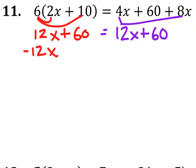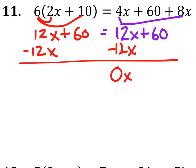You'd subtract 12x from both sides. And that would give you 0x. You get 60 equals 0x plus 60.